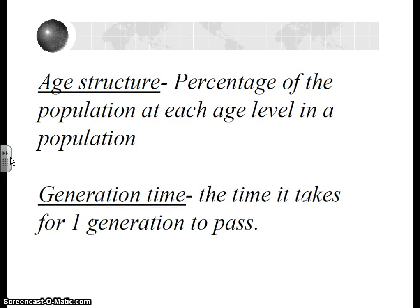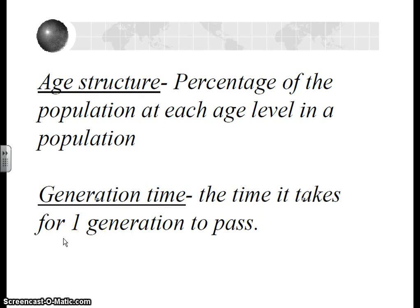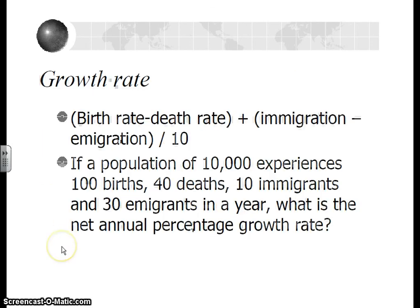Age structure refers to the population pyramids that we've been looking at lately. We can see a histogram — a bar graph — with a male side and a female side split up by ages on the y-axis, to show how many there are in each segment of the population for every five years. Generation time is the time it takes for one generation to pass — in other words, about how long people wait before they have children.